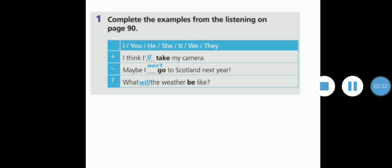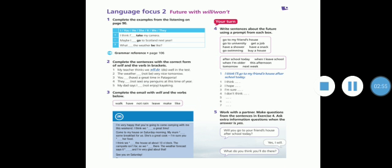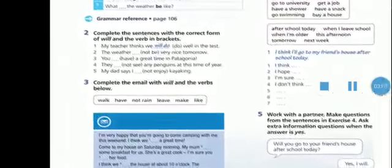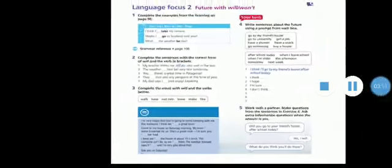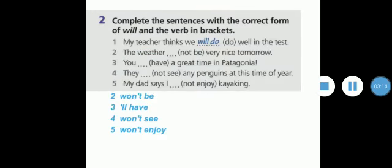Question number two: complete the sentences with the correct form of will and the verb between brackets. So here we're going to complete these sentences with will or won't according to the sentence and we're going to put the verb in the infinitive case. Number one: my teacher thinks we will do well in the test. Number two: the weather won't be very nice, because here we have not between brackets. Number three: you will have a great time in Patagonia. Number four: they won't see any penguins at this time of year. And last one: my dad says I won't enjoy kayaking.